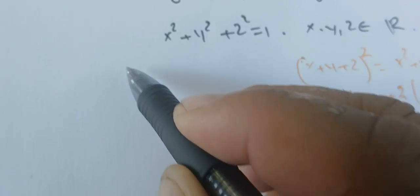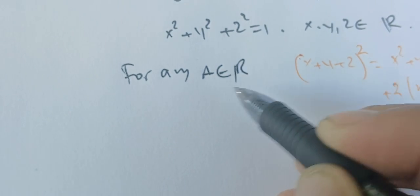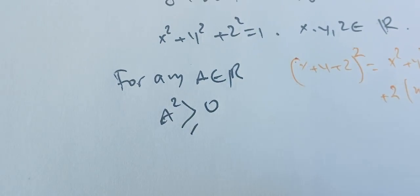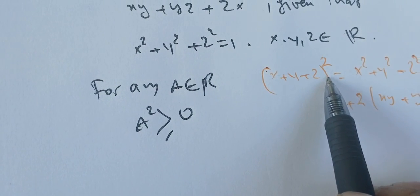So we know that for any A in R, we have A²≥0. So assume that x+y+z is our A.